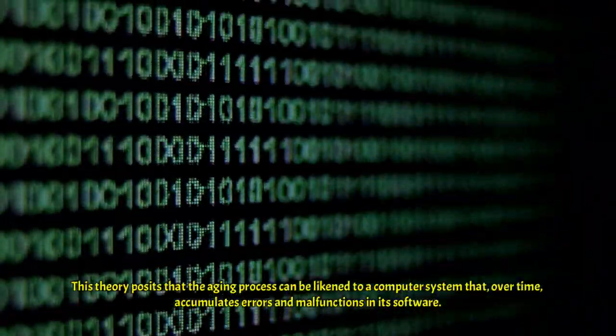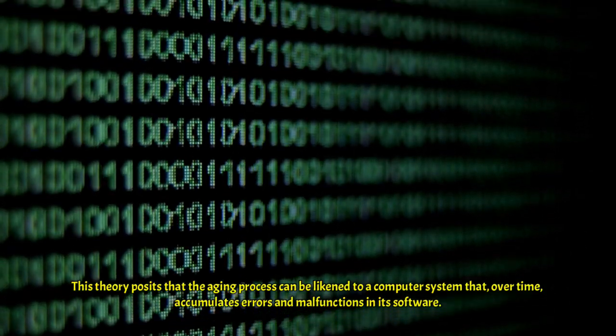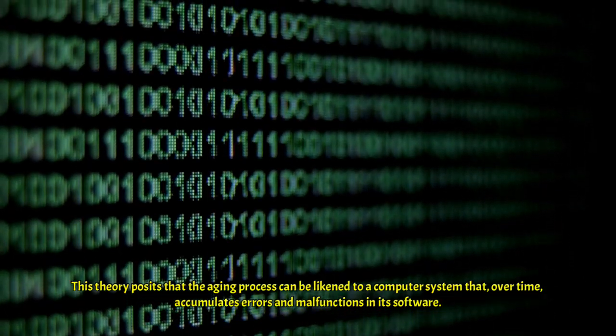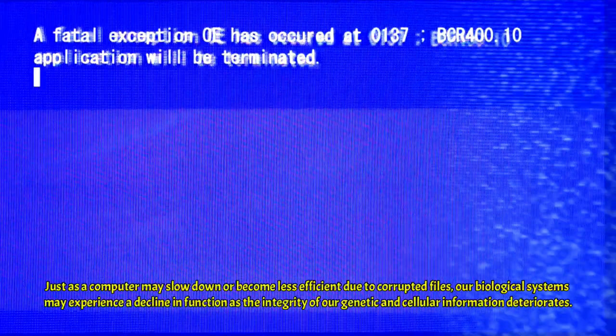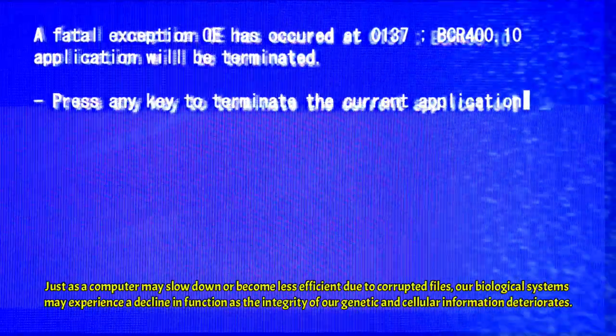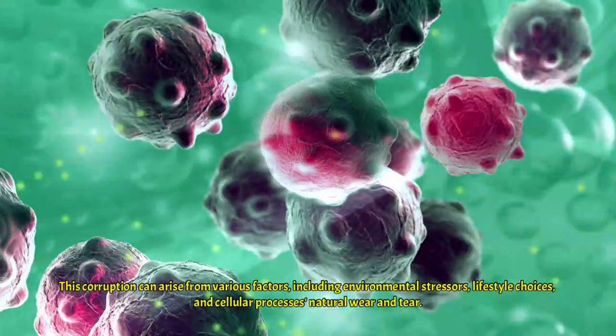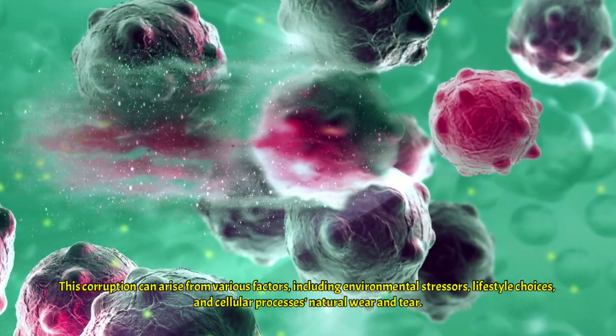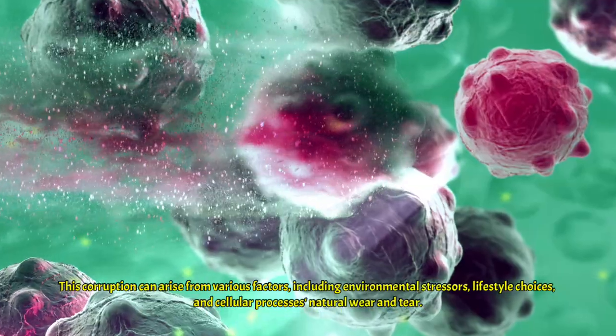One intriguing theory that has emerged in gerontology is the concept of corrupted biological software. This theory posits that the aging process can be likened to a computer system that, over time, accumulates errors and malfunctions in its software. Just as a computer may slow down or become less efficient due to corrupted files, our biological systems may experience a decline in function as the integrity of our genetic and cellular information deteriorates. This corruption can arise from various factors, including environmental stressors, lifestyle choices, and cellular processes, natural wear and tear.